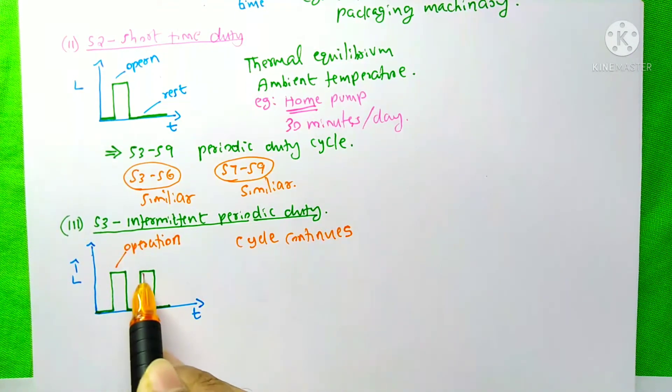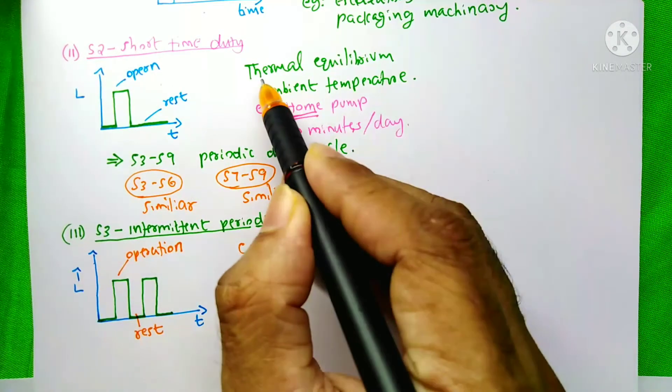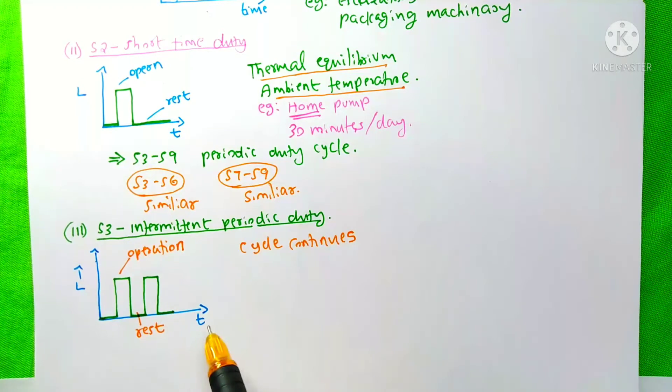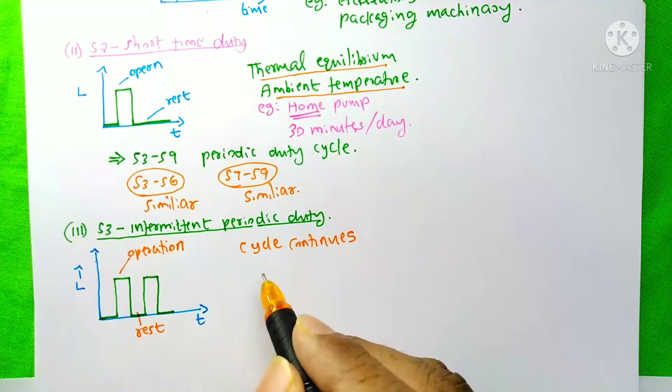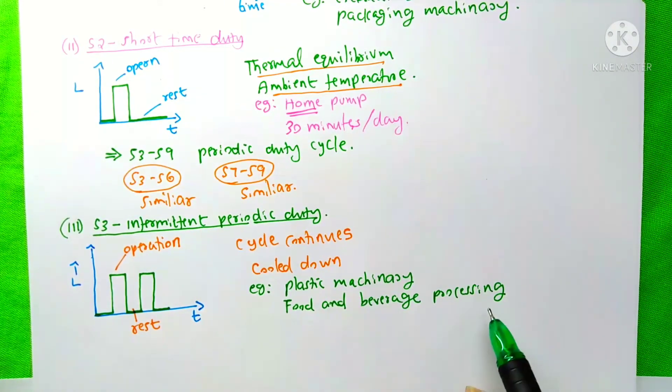On the same day, this motor will be on several times. Because of that, this motor cannot reach the thermal equilibrium state and also the ambient temperature state. That means this motor cannot be cooled down. Motors used in plastic machinery and food and beverage processing are examples of this duty cycle.